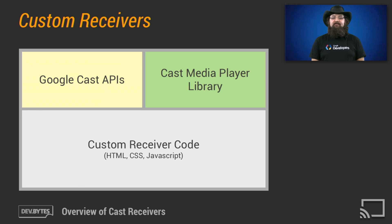The CAST receiver APIs provide ways for developers to build rich applications targeting the TV space. You can utilize the CAST media player library to build media applications that use adaptive streaming, HLS, MPEG-DASH, smooth streaming, and more. They can also handle authentication and use DRM.